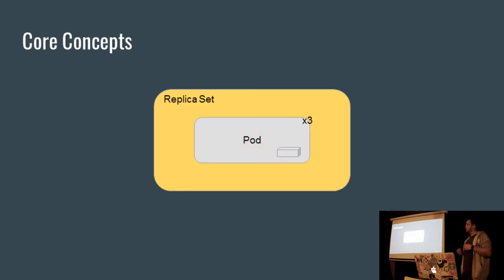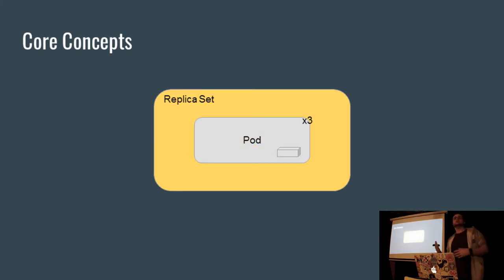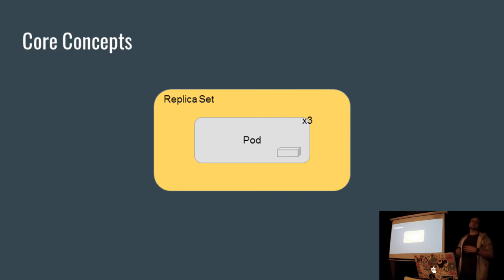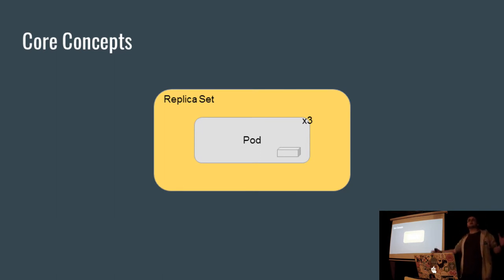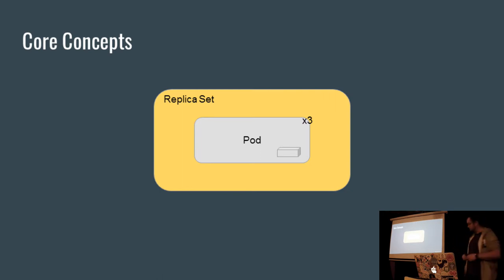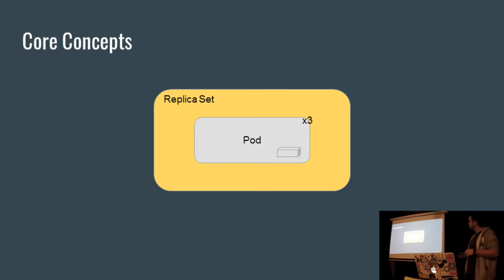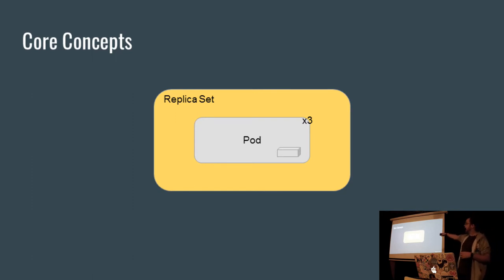Around a pod, we can have a thing called a replica set, which allows us to create multiple instances of our application. So we can spread them out over multiple nodes and multiple computers that we've got, so that if one fails, we've still got more to pick up the slack.